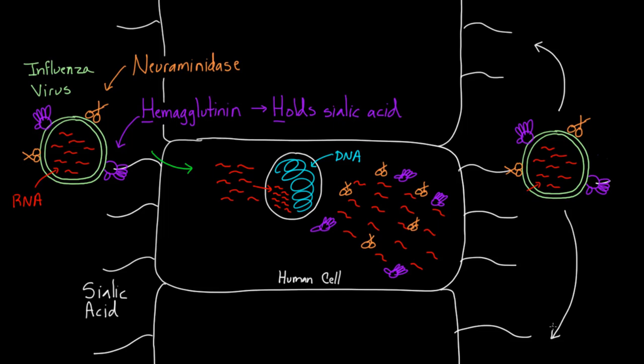But before it can do that, it's got to break loose, because it's still attached to that sialic acid. And so here's where neuraminidase comes in. The neuraminidase basically nicks, and there's where the N is helpful for remembering it. It nicks or cuts sialic acid. So if it can nick or cut that sialic acid, it can break free. I remember the two proteins as hemagglutinin holds sialic acid to enter the cell on entry, and the neuraminidase is going to nick the sialic acid, and that's important for exiting the cell.